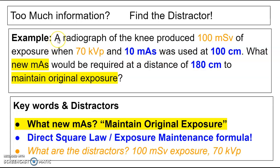So I highlighted a few things here. So what is this question asking me? It's asking me what new mAs would be required at a distance of 180 centimeters to maintain original exposure. What does that tell me? It's asking me for a new mAs to maintain original exposure. Instantly, I remember new mAs at new distance is direct square law. So I know what formula I'm going to use.